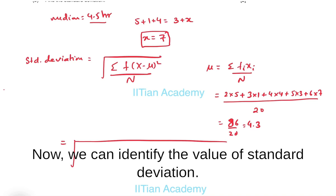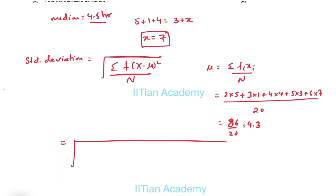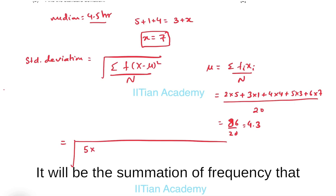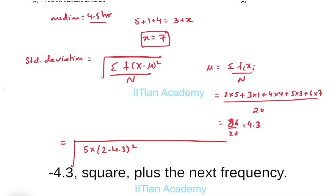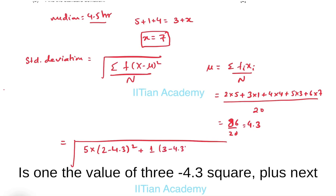Now we can identify the value of standard deviation. It will be the summation of frequency, that is 5 into the value that is 2 minus 4.3 square, plus the next frequency is 1, the value of 3 minus 4.3 square, plus...